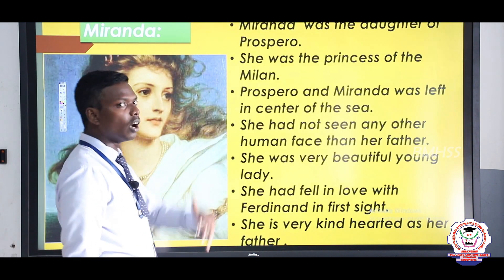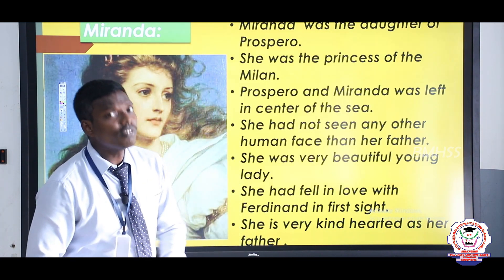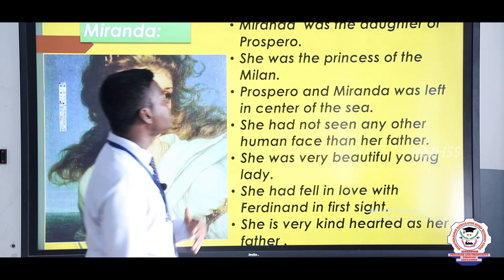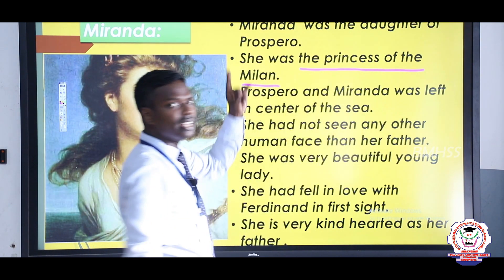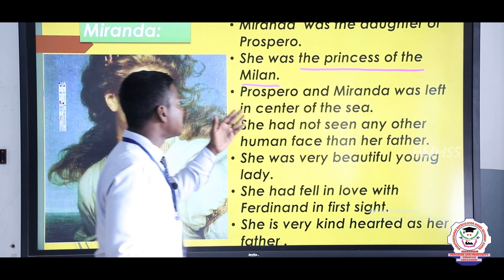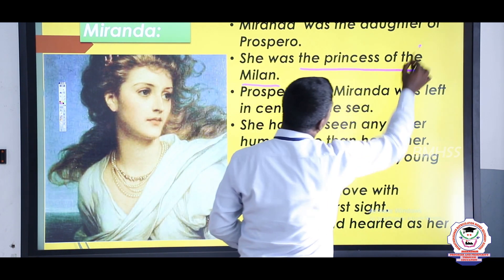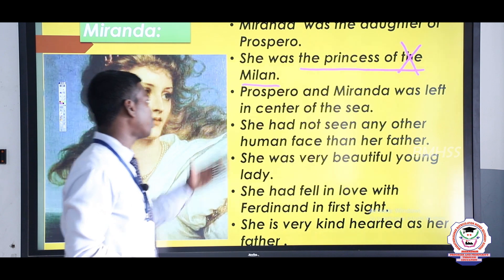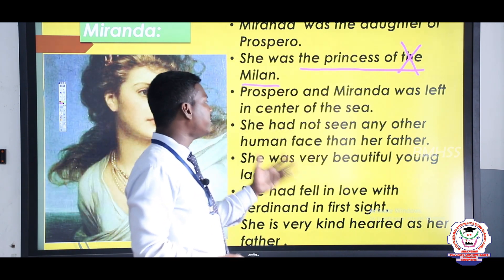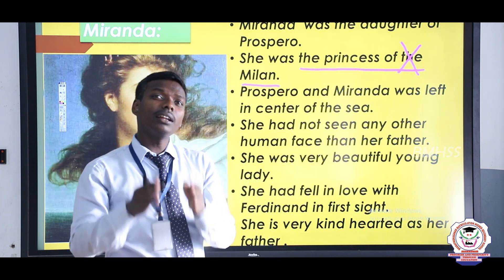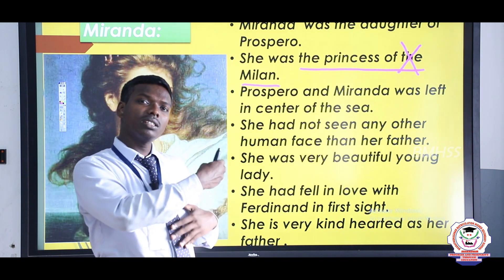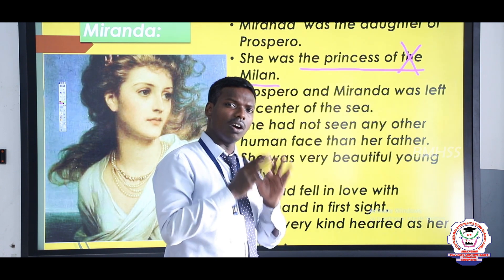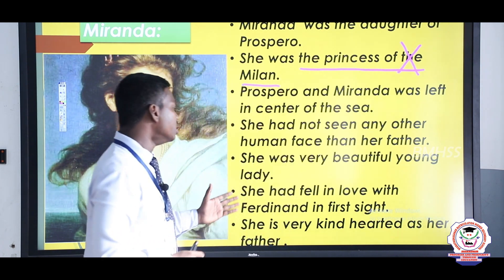Miranda is the only daughter of Prospero, the Duke of Milan, making her the Princess of Milan. Note: before a proper noun you are not supposed to use the article 'the.' Prospero and Miranda were left in the center of the sea, and she had not seen any other human face than her father's before reaching the island.